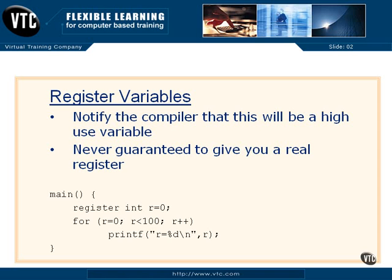What you are telling the compiler in today's world is that this will be a high-use variable — it's something that you're going to rely on a lot. You're going to use it in a loop or for some timing, and the point is that you'll be putting information into it, incrementing it, decrementing it, somehow dealing with this variable quite a bit. Again, you're telling it it's a high-use variable. You're not guaranteed to get a real register.